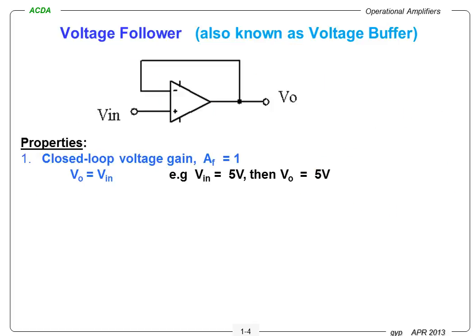A voltage follower is also known as a voltage buffer. Its properties are: closed loop voltage gain equals 1, and output voltage equals input voltage. For example, if V-in equals 5 volts, V-out is also equal to 5 volts.